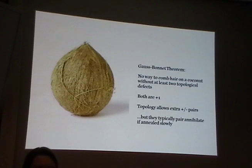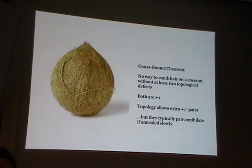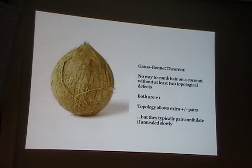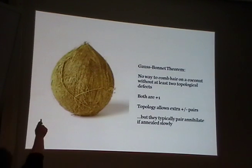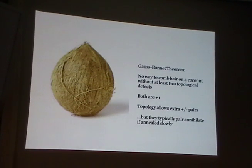Let's talk about the Gauss-Bonnet theorem. Coconuts have hair — and if you look at a coconut, it has a place on top where all the hair goes out and on the bottom where all the hair goes in. Two special points. Can you comb the hair on a coconut so there are no special points?